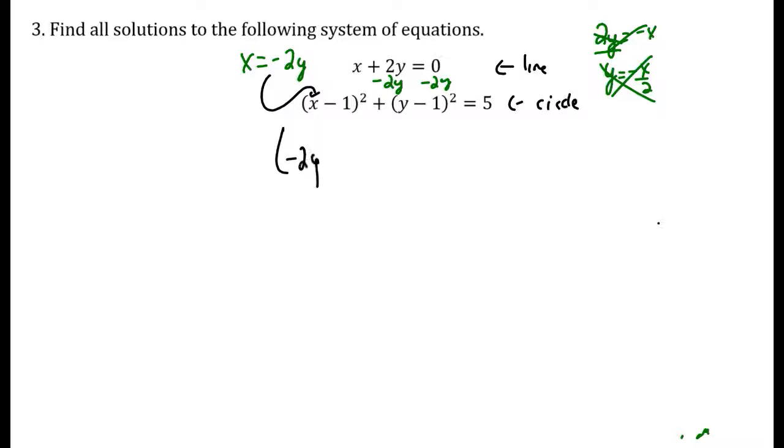So negative 2y minus 1 squared plus y minus 1 squared has to equal 5. Make a table, if you need to, to multiply those binomials together there.